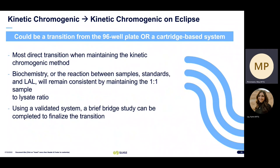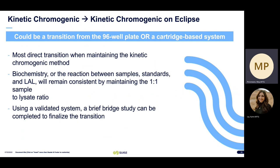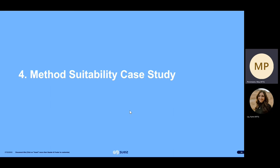The most simple of all is switching from a kinetic chromogenic method on traditional 96-well plates or a cartridge-based system to kinetic chromogenic on the Eclipse. This is the most direct transition when maintaining the kinetic chromogenic method. The biochemistry — the reaction between samples, standards, and LAL — will remain consistent by maintaining the one-to-one sample-to-lysate ratio. The ratio verification is part of the Eclipse system validation process, routine maintenance, and is a hard-coded protocol within the Eclipse software. Using a validated system, a brief bridge study can be completed to finalize the transition by performing side-by-side testing with the existing sample preparation, requiring little additional effort.